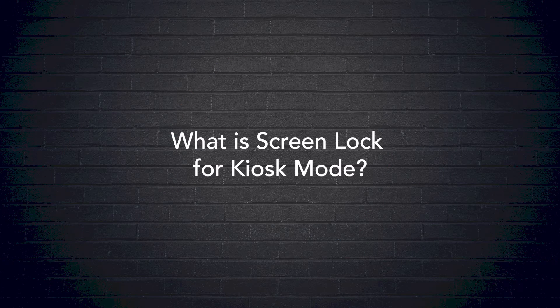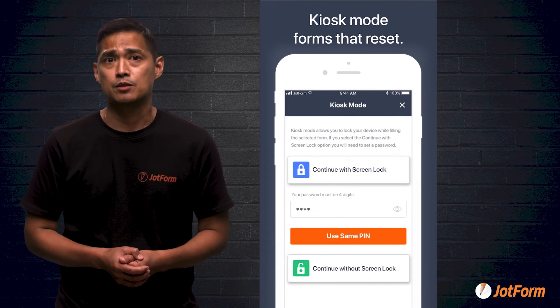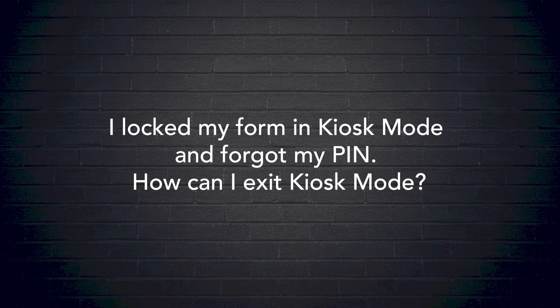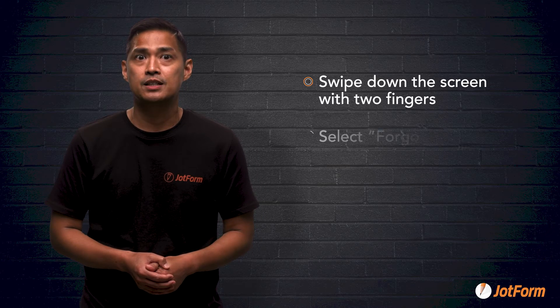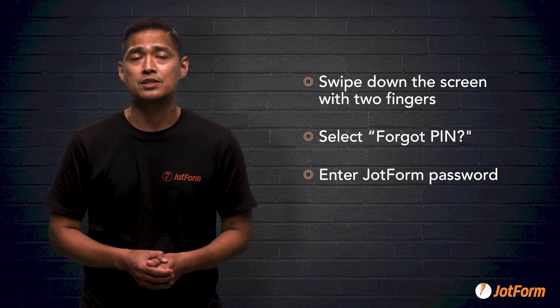What is screen lock for kiosk mode? Screen lock prevents users from exiting the form during kiosk mode. I locked my form in kiosk mode and forgot my PIN — how can I exit kiosk mode? Don't worry. You can use your JotForm password to turn off kiosk mode if you forget your PIN. Just swipe down the screen with two fingers, select Forgot PIN, and enter your JotForm password instead.